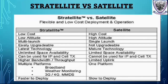Stratolite has unlimited space ability and can be used for IP and cell TX. Satellite has limited space ability and cannot be used for IP and cell TX. Stratolite supports multiple platforms like broadband, weather monitoring, 4G, 3G, and MMDS. Satellite supports one platform only. Stratolite is faster to deploy; satellite is slower to deploy.